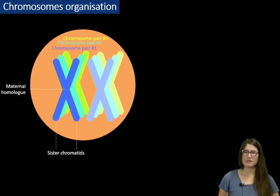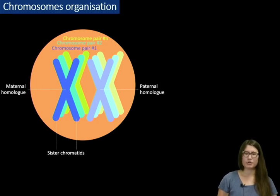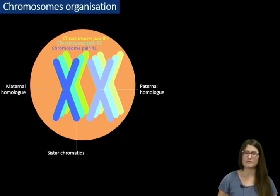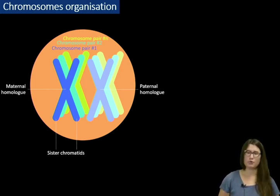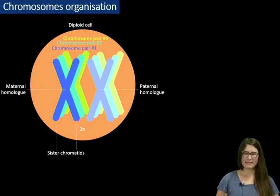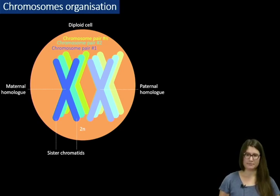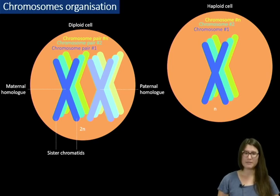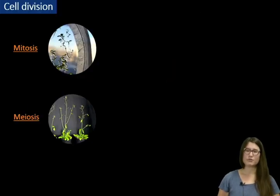Every single chromosome is composed of two identical sister chromatids. Every pair of chromosomes is composed of a maternal homolog and a paternal homolog. This means that the maternal homolog comes from the mother of the organism and the paternal homolog comes from the father — of course only in a case when the organism can sexually reproduce. When every chromosome has its pair, we are talking about a diploid cell, annotated as 2n. When chromosomes don't have their homolog pairs, they are called haploid cells, annotated as n. This information is crucial to understand how two types of cell division work: mitosis and meiosis.